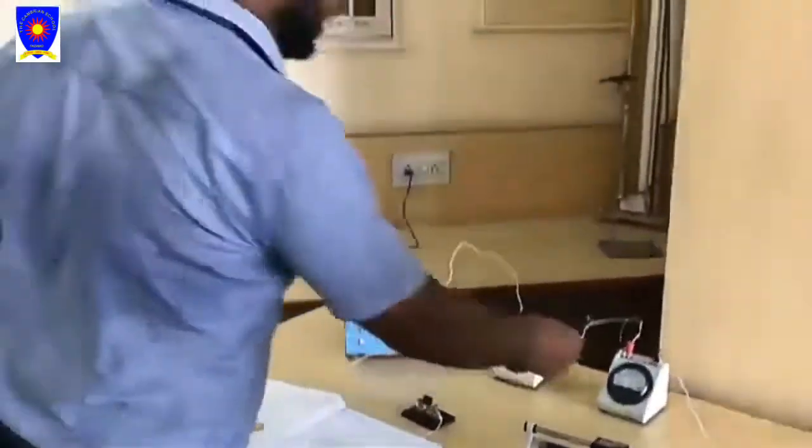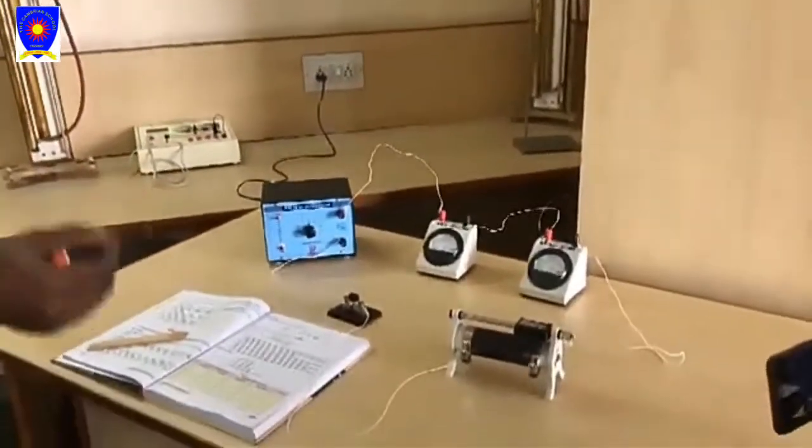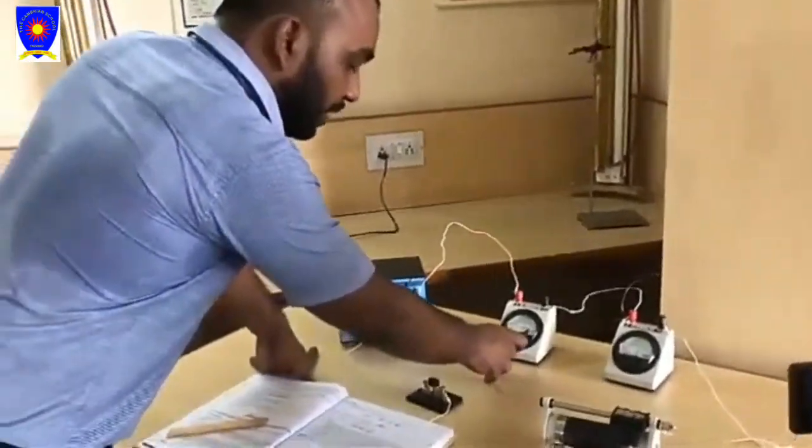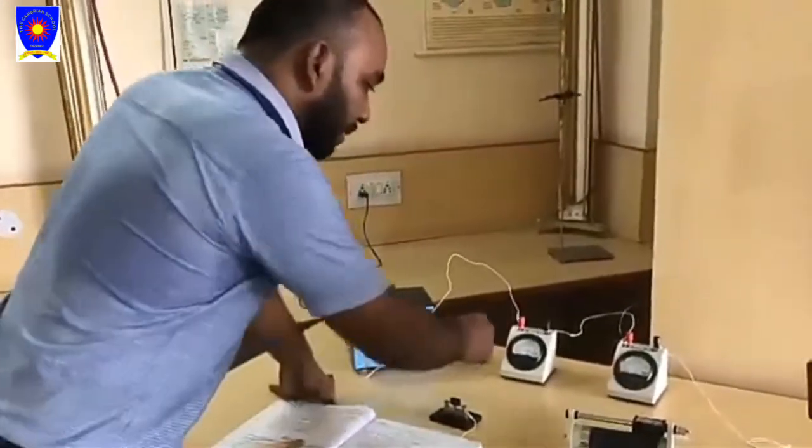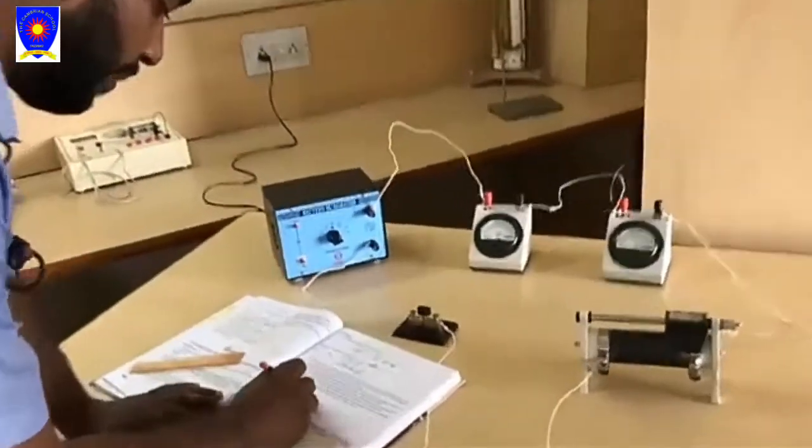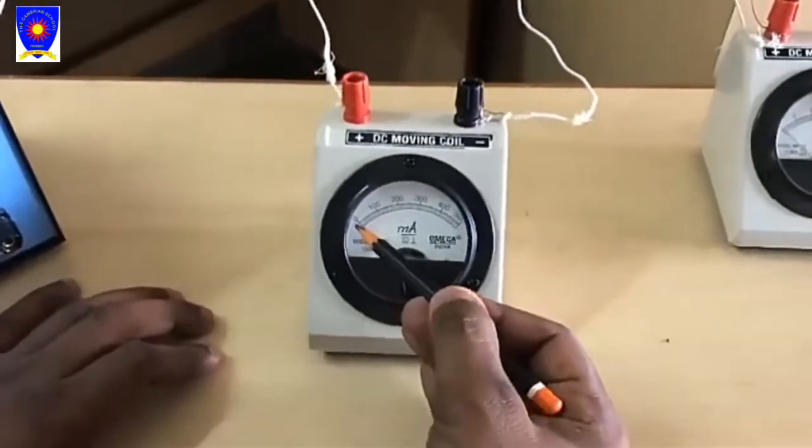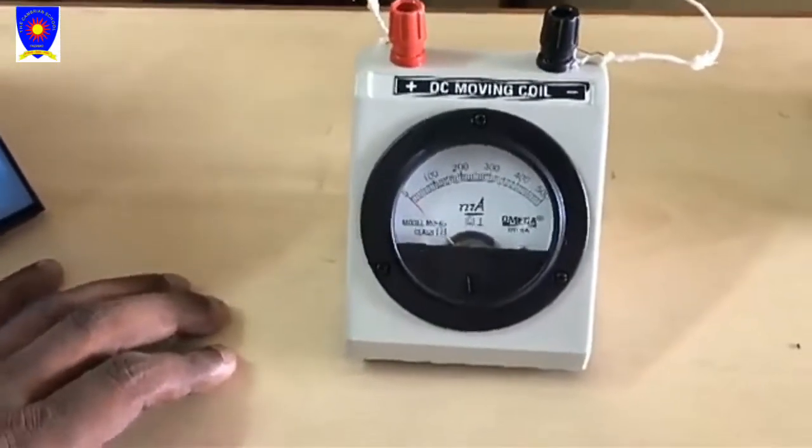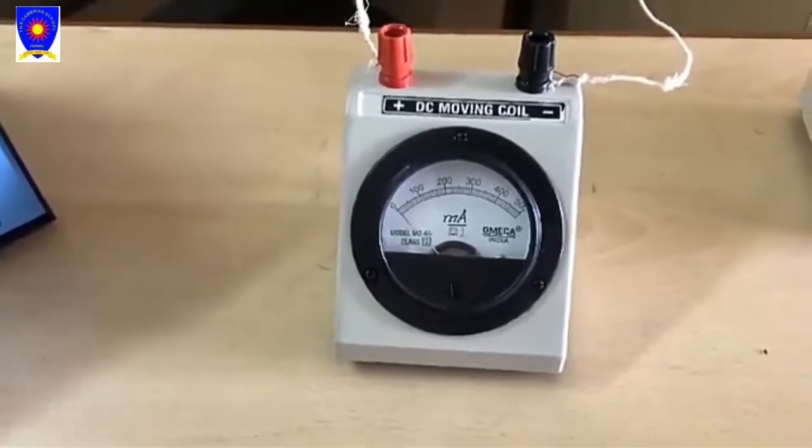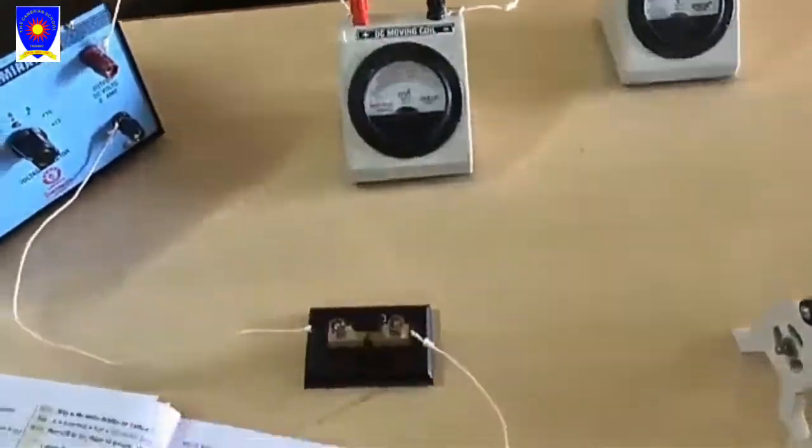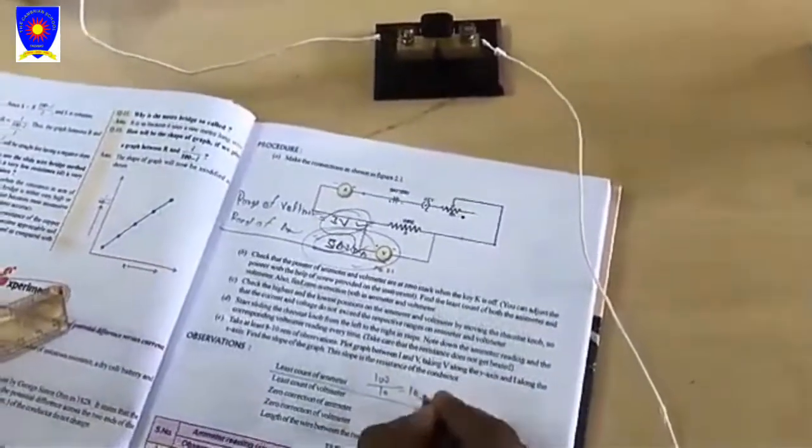Firstly we should know about the apparatus, like the milliammeter. What is the range of milliammeter? Range is 500. Least count of the ammeter - how can we find least count? First reading from 0 is 100. We learned in class 10 how to find its range - 100 means its first reading is 100 and the divisions are 10, so 100 upon 10 equals 10 milliampere.